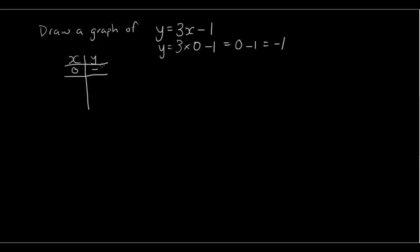Okay, so that's negative 1. When x is 1, y is 3 times 1 minus 1. So that's 3 minus 1 which is 2. And when x equals 2, 3 times 2 is 6 minus 1 is 5. Okay, now let's draw our Cartesian plane.